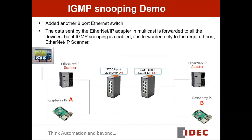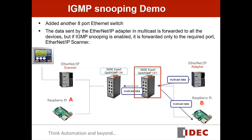To demo the IGMP Snooping function, I added another 8-port Ethernet switch with IGMP Snooping disabled. So the data sent by the Ethernet IP adapter in multicast is forwarded to all devices including the Raspberry Pi B, because IGMP is disabled on the switch. But if IGMP Snooping is enabled, it's forwarded only to the required device, the Ethernet IP scanner, but not to the Raspberry Pi A.